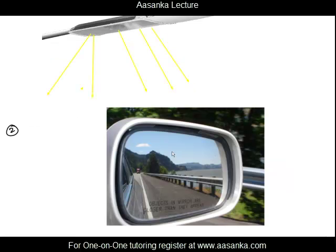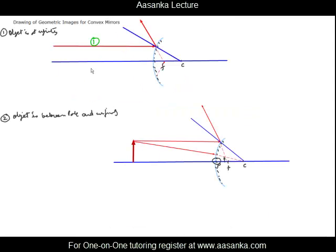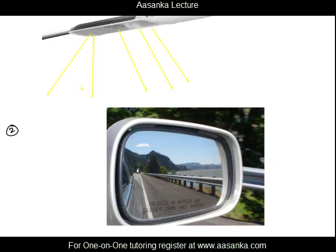The second very important use of a convex mirror is as a rearview mirror in cars to see objects at the back. When objects are far off or at infinity, rays come in parallel and form an image near the focus of the convex mirror. We see objects as if they are located at that focal point. As shown in the ray diagram, a truck far behind the car forms an image at the focus, allowing the driver to see it.